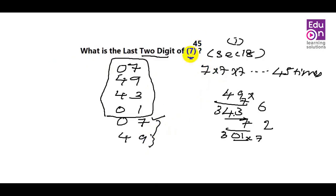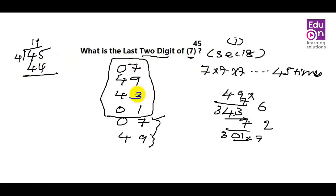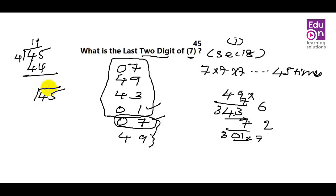How do we do 7 raised to 45? The cycle of 4 rows repeats: 0, 1. The answer is 07. The answer is 07.